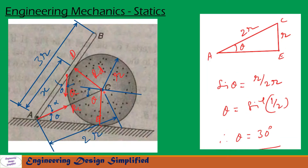Now let us draw a vertical line from C to E, forming right angle triangle ACE with angle at E equal to 90 degrees. Let us call the angle at A as theta. From this triangle, side AC is 2R and the horizontal side is R, so sin theta = R / 2R, giving theta = 30 degrees.